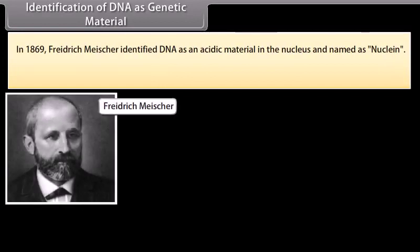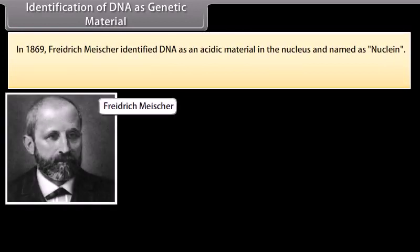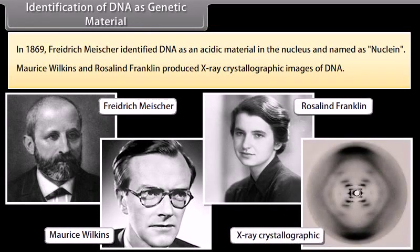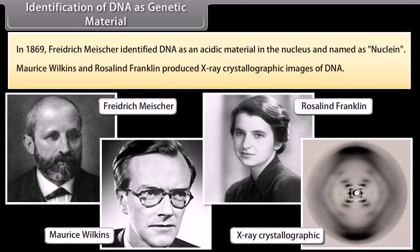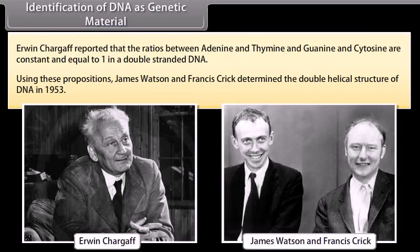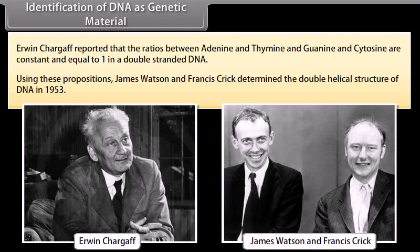Identification of DNA as genetic material. In 1869, Frederick Miescher identified DNA as an acidic material in the nucleus and named it nuclein. Morris Wilkins and Rosalind Franklin produced X-ray crystallographic images of DNA. Erwin Chargaff reported that the ratio between adenine and thymine and guanine and cytosine are constant and equal to 1 in a double-stranded DNA. Using these propositions, James Watson and Francis Crick determined the double helical structure of DNA in 1953.